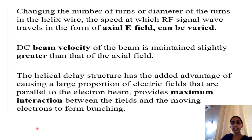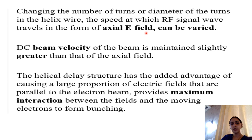The helical structure inside the traveling wave tube produces an axial electric field. By adjusting the number of turns or the diameter of the turns in the helix wire, we can adjust the speed at which the RF signal wave travels as an axial electric field. The DC beam velocity of the electrons is always kept slightly greater than that of the axial field — only then can amplification of the signal occur.